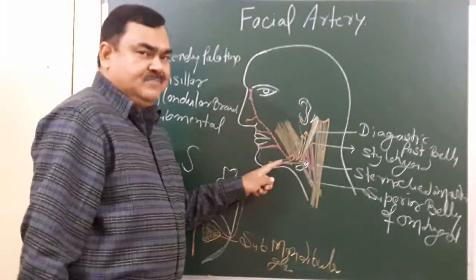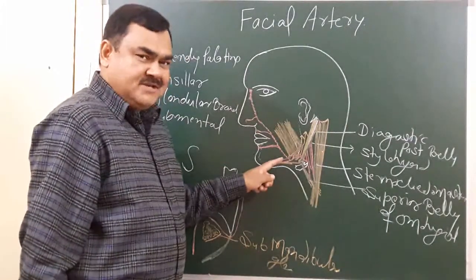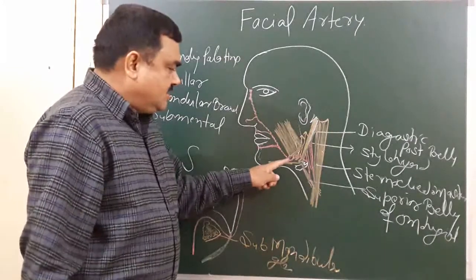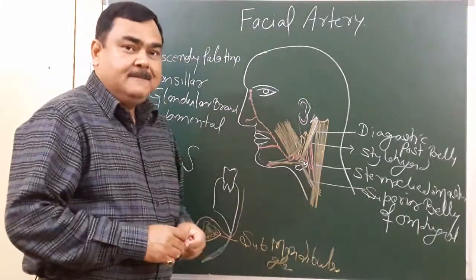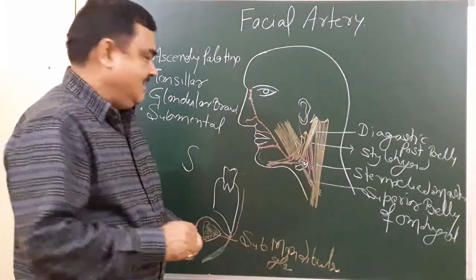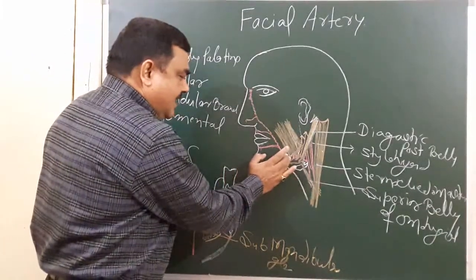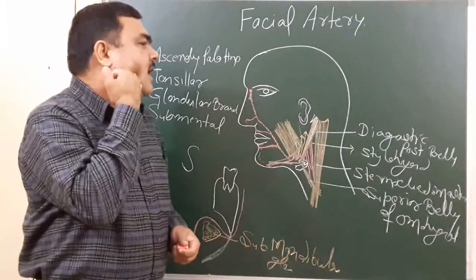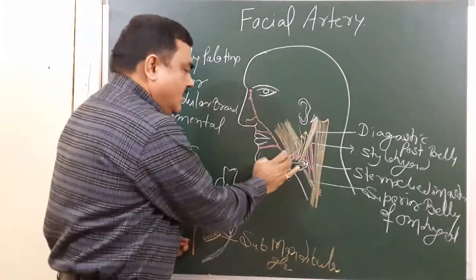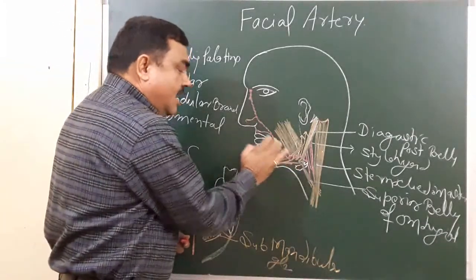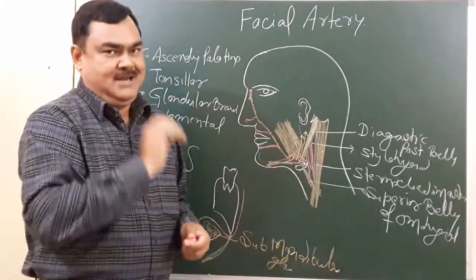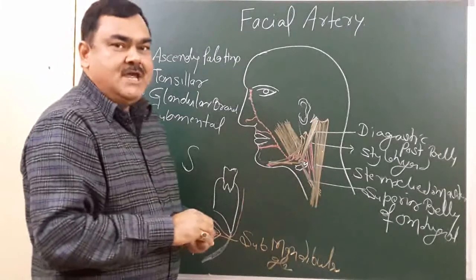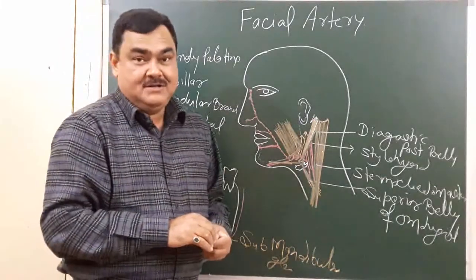This artery is the artery of anesthetists — anesthetists use this artery for counting the pulsation by applying a finger at the anterior inferior angle of the masseter to feel the pulse. This is all about the facial artery. Thank you.